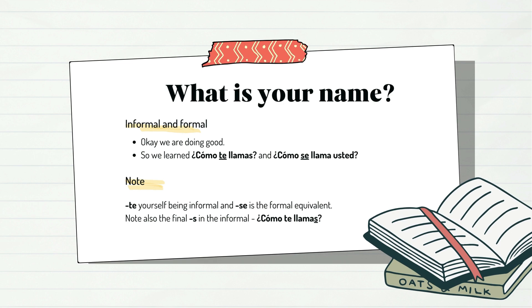We are doing good. So we learned ¿Cómo te llamas? and ¿Cómo se llama usted? — which translates literally as 'how do you call yourself?' — te meaning 'yourself' being informal, and se being the formal equivalent. Note also the final S in the informal ¿Cómo te llamas?